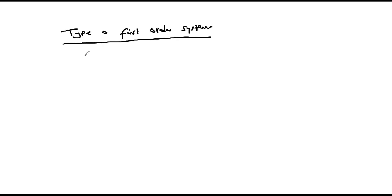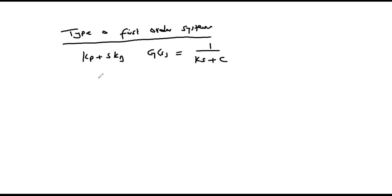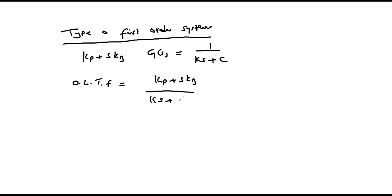The controller is defined by kp + s·kd, and for a type 0 first order system, the plant is defined by G(s) = 1/(ks + c). From this we can obtain the open loop transfer function of the system, which is the product of the two: (kp + s·kd)/(ks + c).